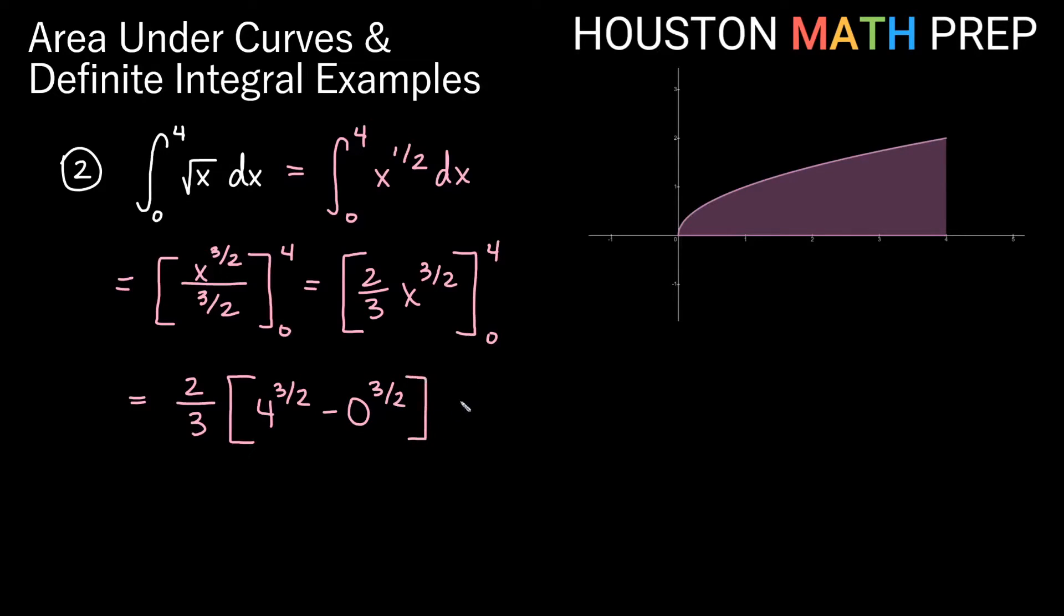Now we just want to be careful about our power 3 halves here. What does this mean? Well, this denominator of 2 means take the square root. So both of these say take the square root. And then the 3 on the top of the fraction says then cube whatever you get. So we would actually have, let's do the square root part first. If I just do the square root part, this becomes 2. So we'd have 2 cubed minus, if I take the square root of 0, I would still have 0. So each of these become cubes. And then we can think of 2 thirds times 2 cubed, which is going to be 8. 0 cubed is going to be 0. So we end up with 2 thirds times 8, and that gives us 16 thirds.